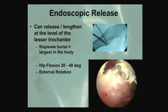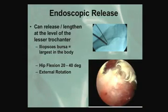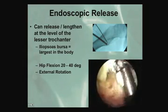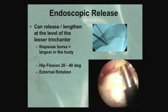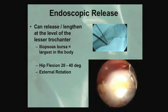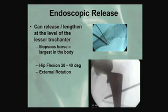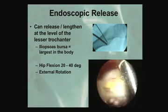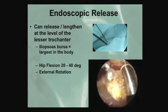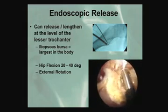Endoscopically there are a couple of different ways to do this. One approach goes extra-articular right into the bursa — using the ablator you get a very nice exposure of the psoas tendon sitting right up against the lesser tuberosity. With the hip in extension and external rotation, you can pretty easily get to the entire psoas and do a complete release. My only indication for this approach is a patient with a total hip — as shown here, a patient with a total hip who had cup impingement.